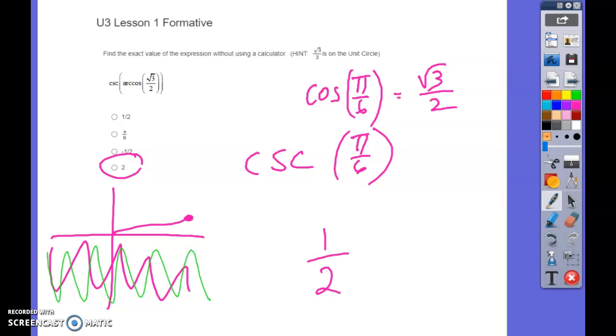So now we go ahead and substitute pi over 6 in here. So what's the cosecant of pi over 6? Well, the cosecant of pi over 6, you have to think, well, you're going to think, I should have written this down.